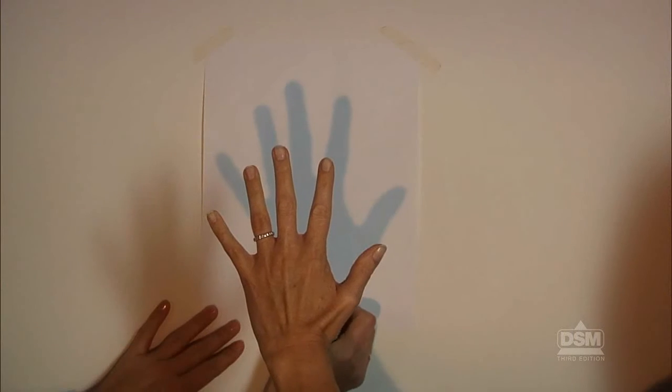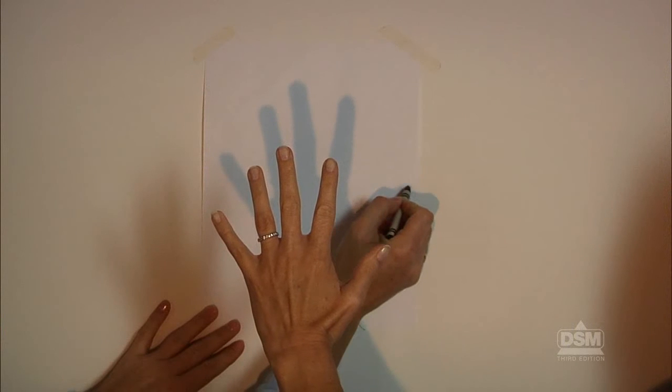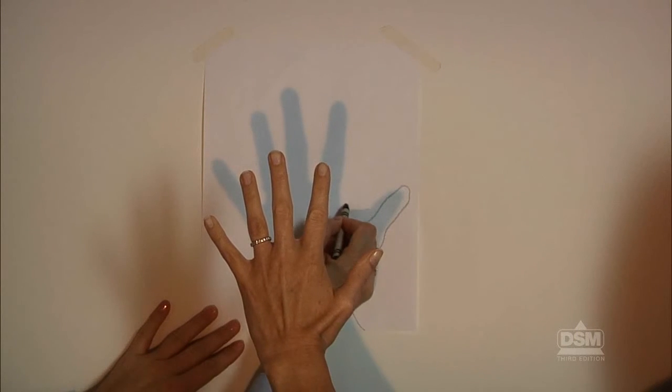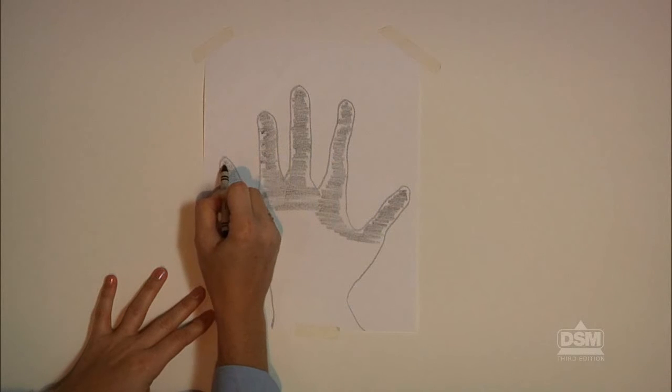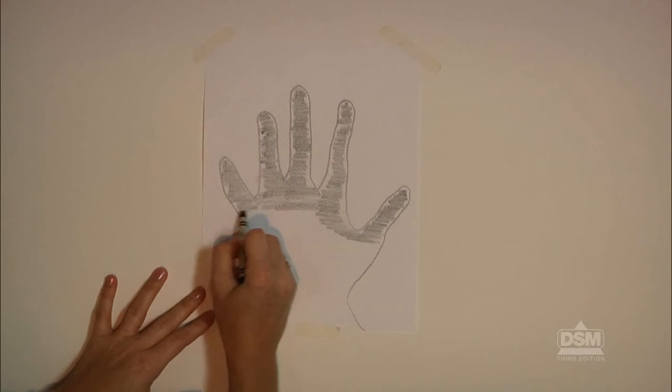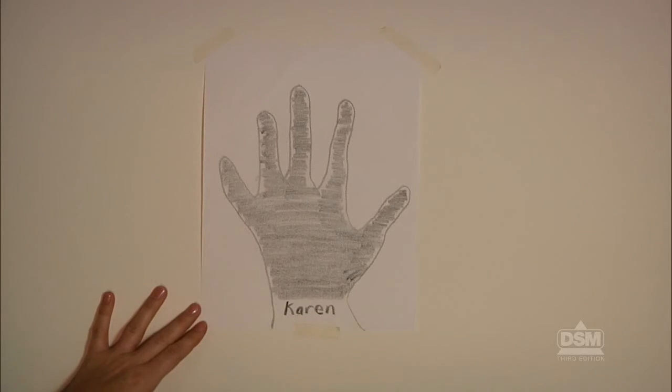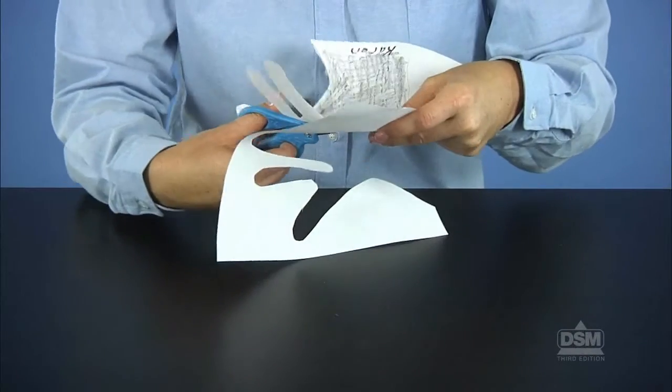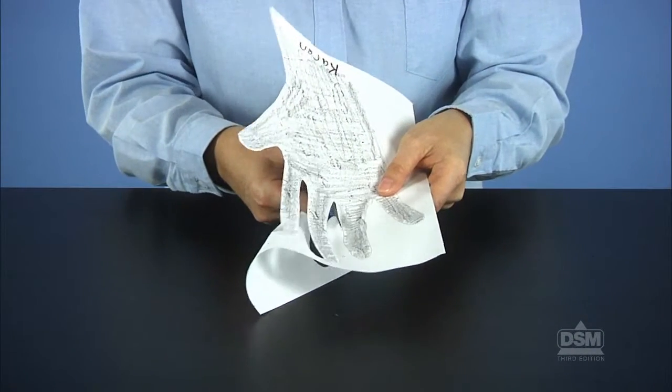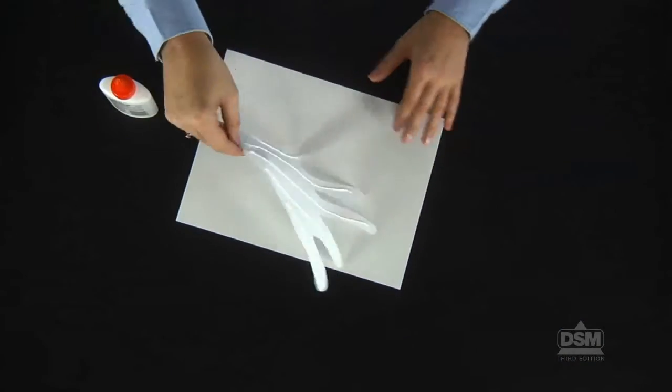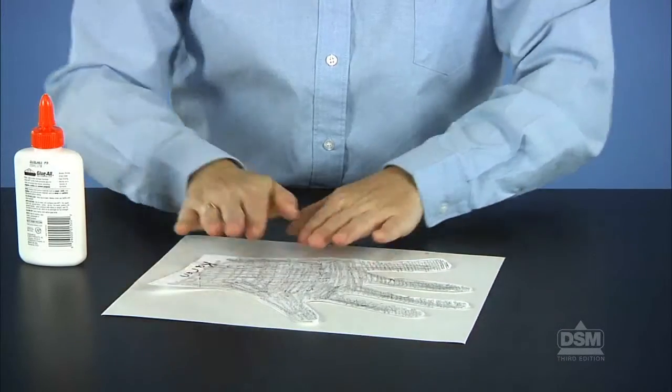Then, tell a third team member to trace the shadow with a crayon, while the fourth team member colors in the outline solid black. Instruct students to write their names on the white paper under their hand silhouettes, and have the first student cut out the silhouette of the hand and glue it onto the second sheet of white paper. Repeat the process for each student.